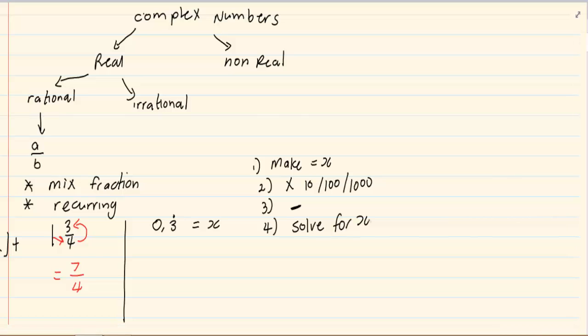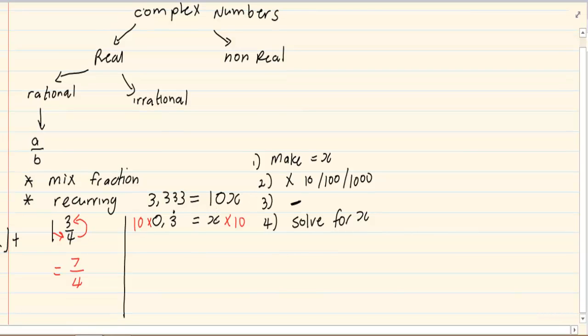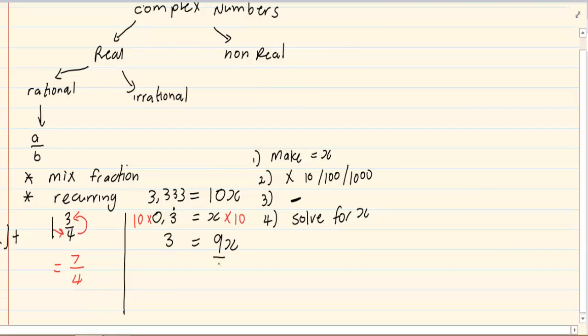So doing this example, 0.3 recurring is equal to x. I am going to times it by 10. So we have got 10x is equal to 3.333. Then we are going to subtract. So 10x minus x is 9x and 3.333 minus 0.333 is going to equal to 3. Then we divide by 9 gives us x is equal to 1 over 3 which proves that recurring fractions can be written in the form of a over b. Next we are doing rounding off.